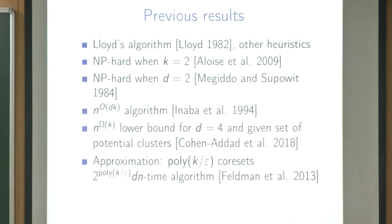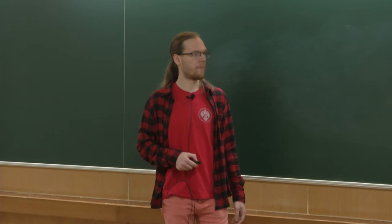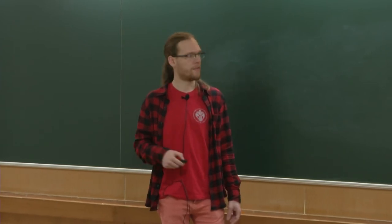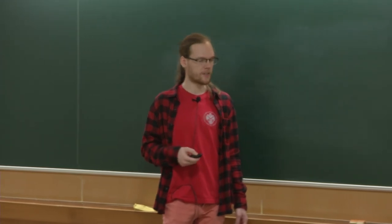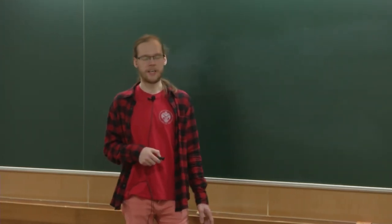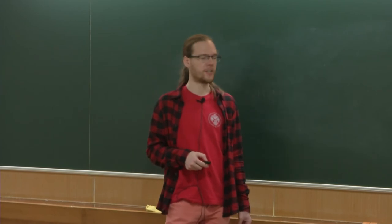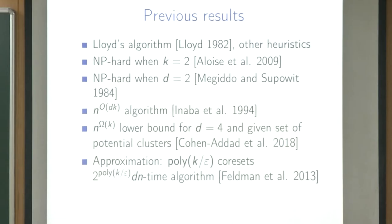There was also a lot of work on approximation algorithms for k-clustering, because in practice people don't really care about the exact solution — one-plus-epsilon is fine. There were a lot of nice results, for instance the coreset line of research, which is very extensive. There is a poly(k/ε) coreset — I think it's even (k/ε)^2 — meaning we can pick a small number of points such that the instance with only those points is equivalent to the original.